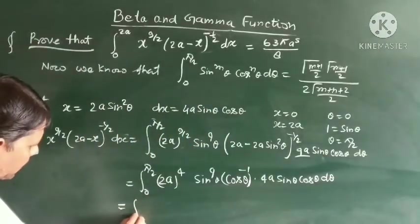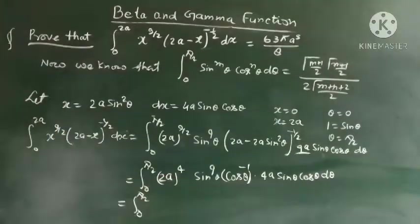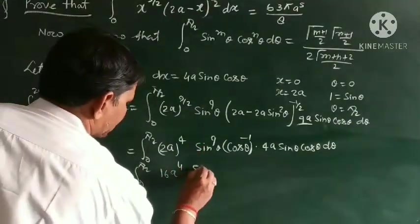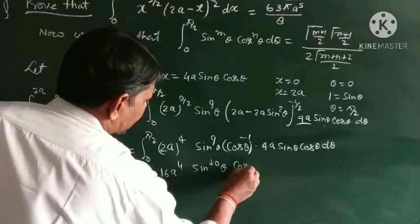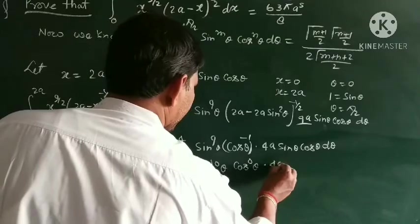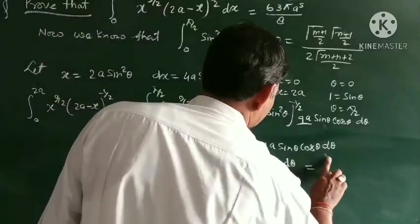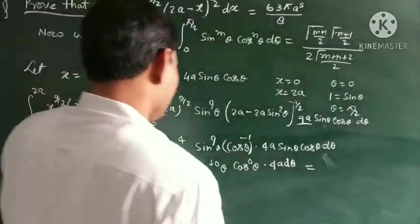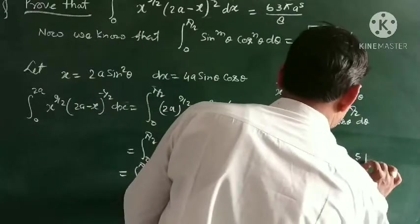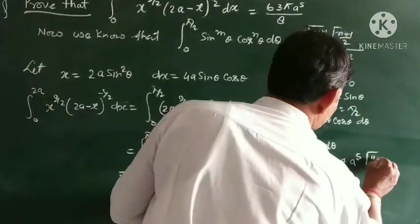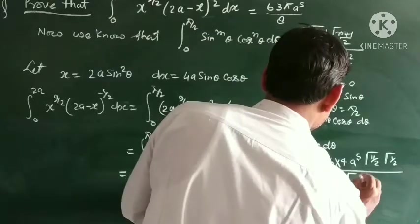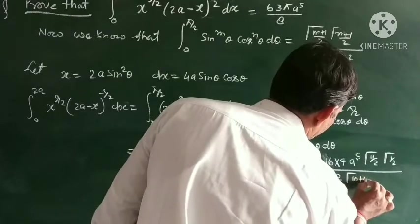This becomes the integral of 0 to π/2 of 16a to the power 4 times sin to the power 10 θ times cos to the power 0 dθ. Now applying the beta-gamma formula, m+1 = 11/2, n+1 = 1/2, giving gamma(11/2) · gamma(1/2) divided by 2 · gamma((m+n+2)/2).